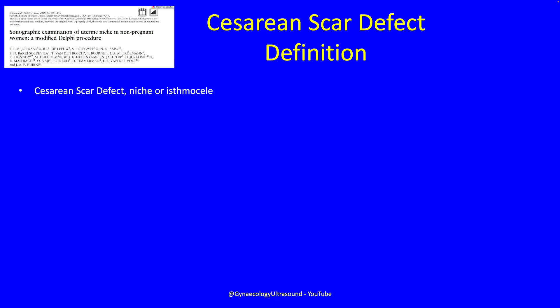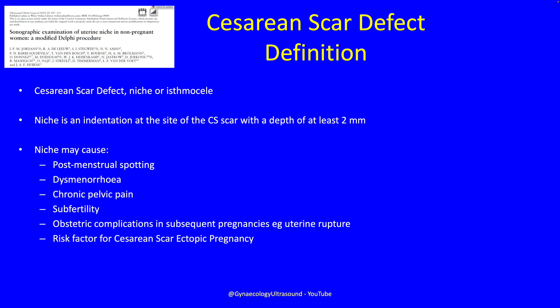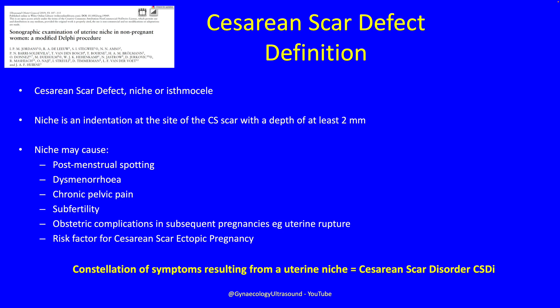The definition of a caesarean scar defect, which is also called a niche or isthmocele, is an indentation at the site of the section scar with a depth of at least two millimeters. A niche can cause symptoms like postmenstrual spotting, dysmenorrhea, chronic pelvic pain, subfertility, obstetric complications in a future pregnancy, and it's a risk factor for caesarean scar ectopic pregnancy. If there are symptoms resulting from a niche, this is called a caesarean scar disorder.